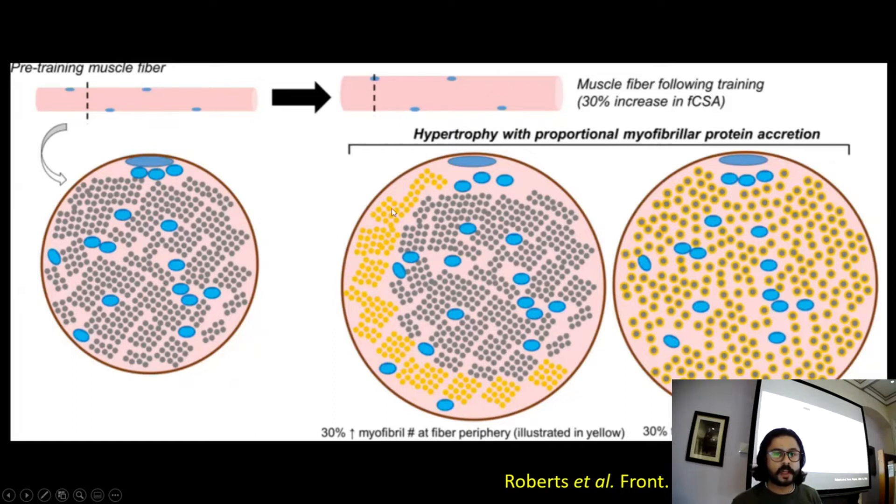These are all of the original myofibrils. And these are the new ones. And there's a 30% increase in the number of myofibrils on the periphery. Now that's one way that the muscle fiber becomes bigger. That's one way how my bicep becomes bigger.